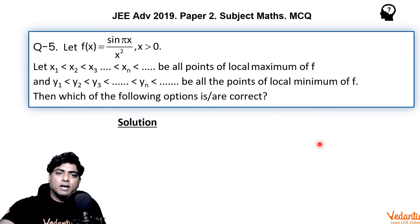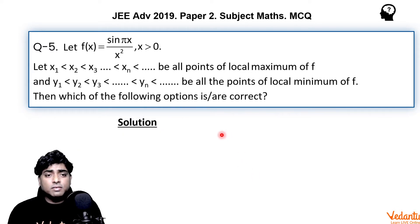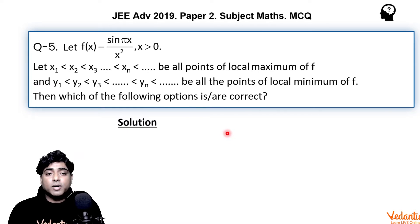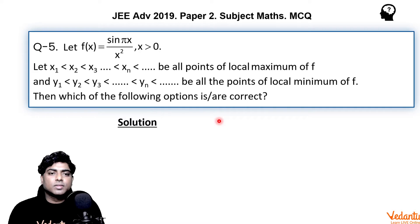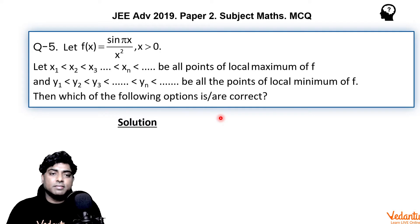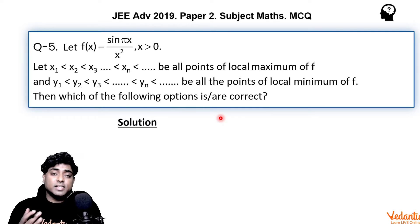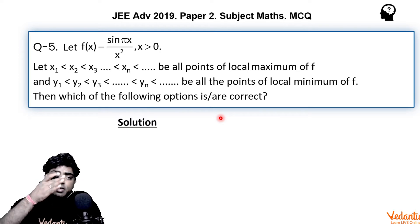To solve this, we go through the first derivative of the function. The points of local maxima are points where the first derivative changes sign from positive to negative as we move left to right, and the points of local minima are where f'(x) changes sign from negative to positive.